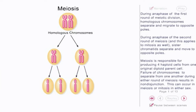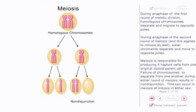Meiosis is responsible for producing four haploid cells from one original diploid parent cell. Failure of chromosomes to separate from one another during either round of meiosis results in non-disjunction. This can occur in meiosis or mitosis in either sex.